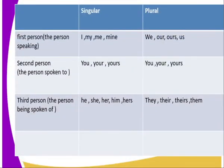The first person refers to the person speaking. In its singular form we have words such as I, me, mine; whereas in its plural form we have we, us, our. The second person refers to the person spoken to, or the person that the first person is addressing. In both singular and plural we use: you, yours.